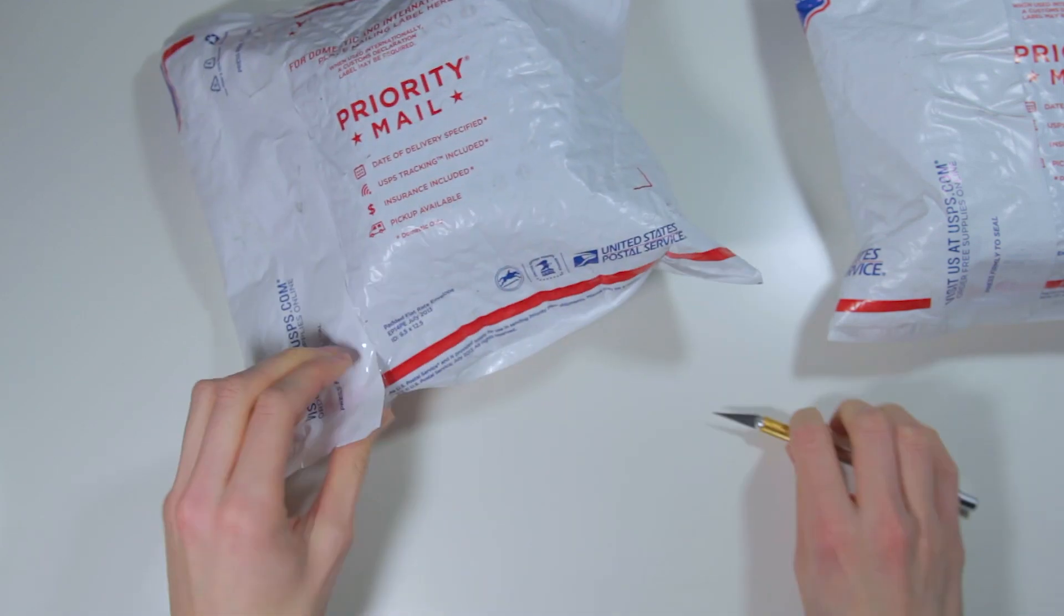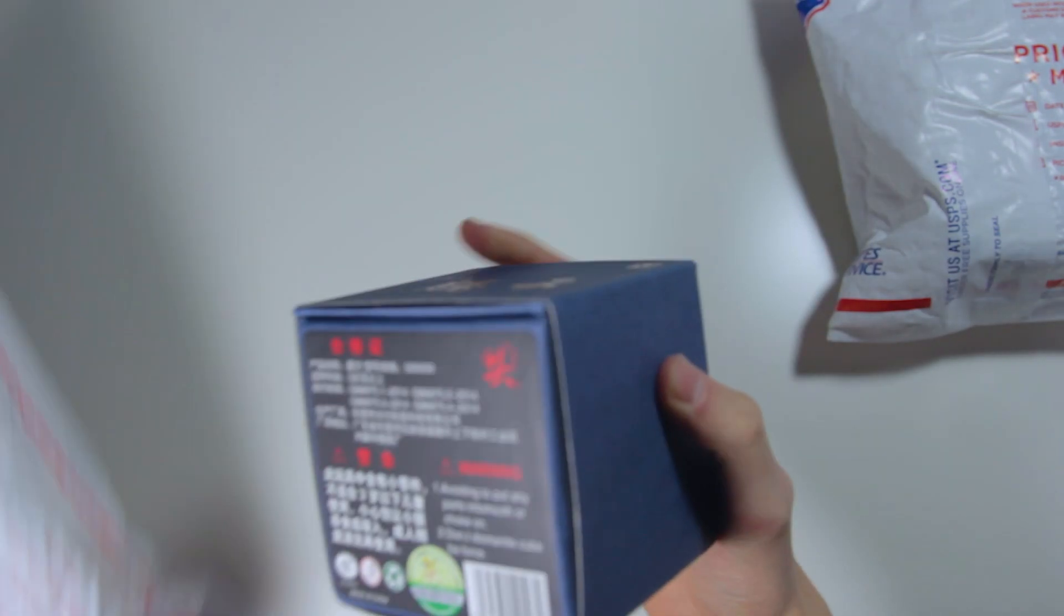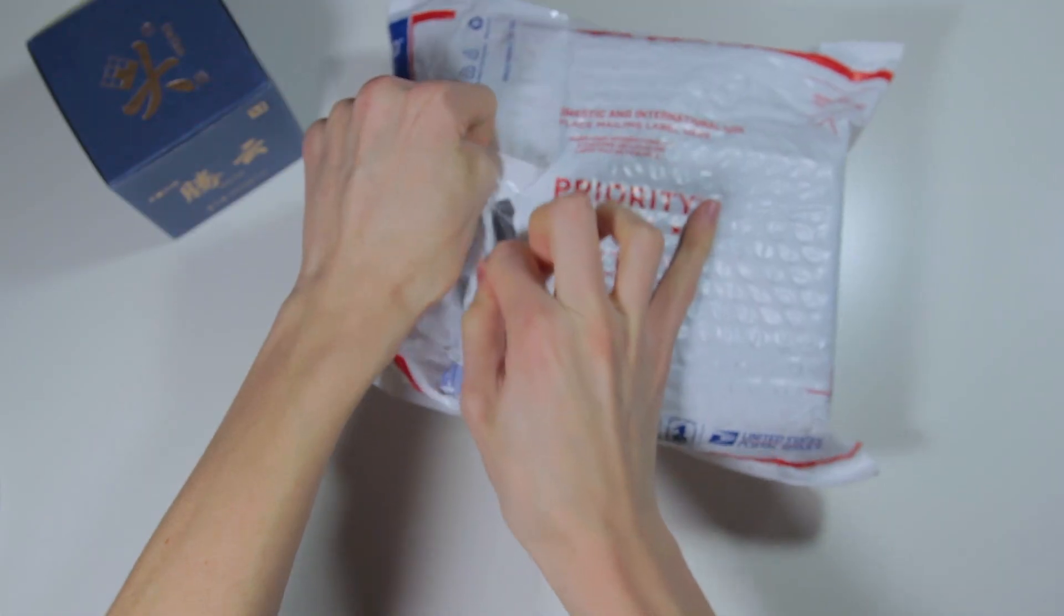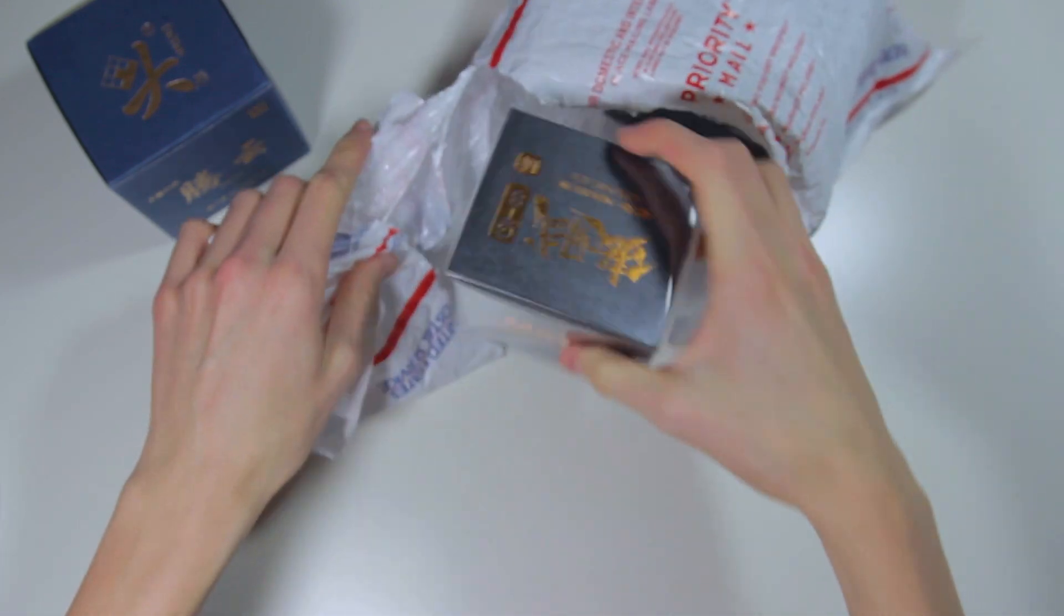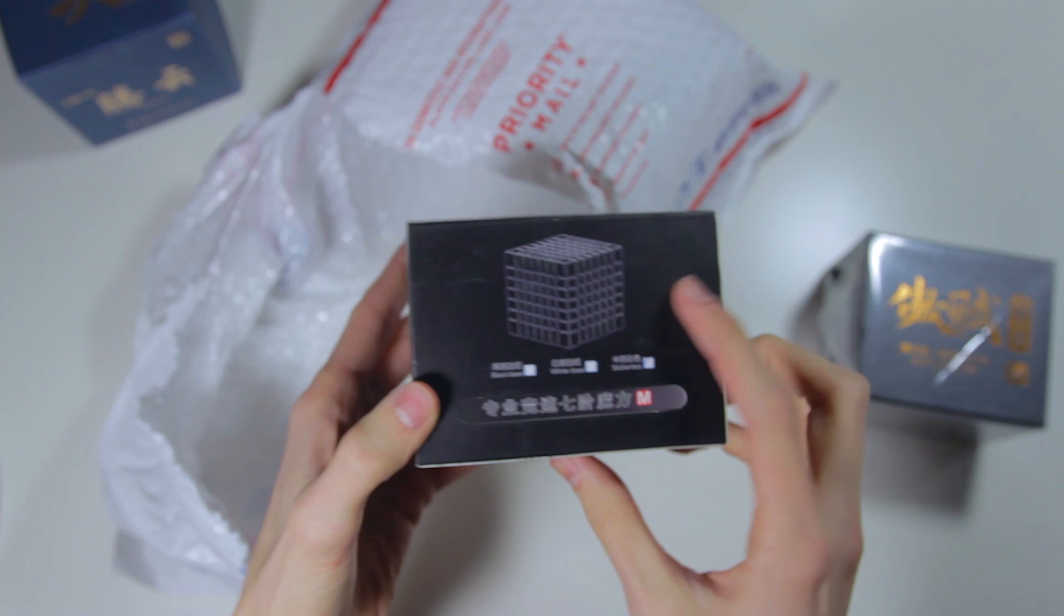Hey guys, what's up? Today I'm going to be unboxing two packages from thecubicle.com. In these packages, there are three cubes: the new Dayan Tengyun M 3x3, the Moyu Aofu GTS-M 7x7, and the X-Man Spark M 7x7.